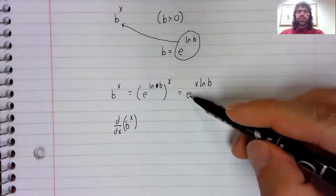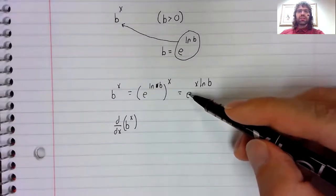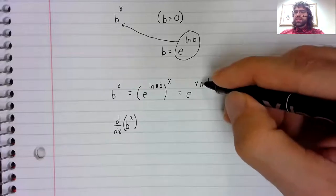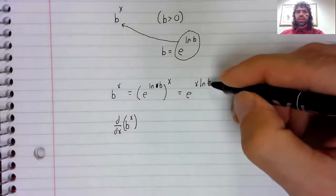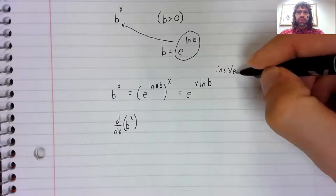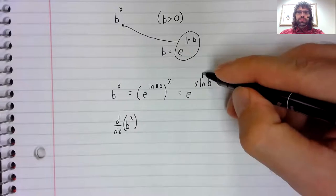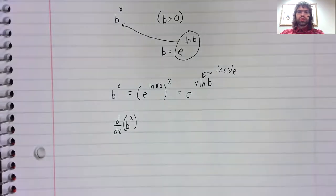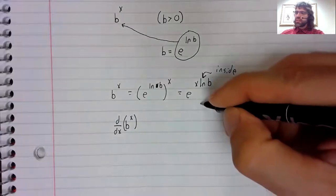Now we know how to differentiate e to the x. We have e to some more complicated expression. This is the chain rule.